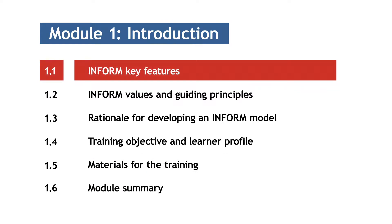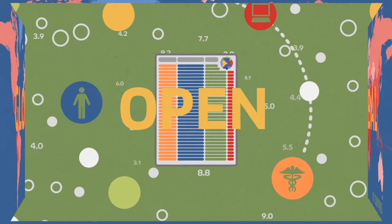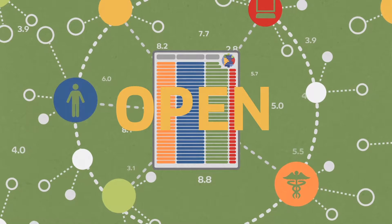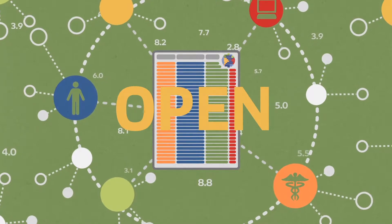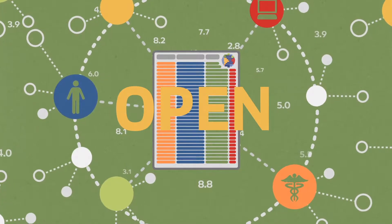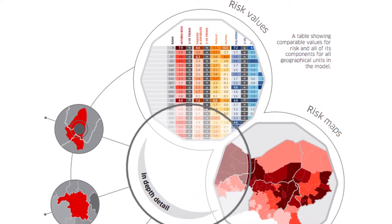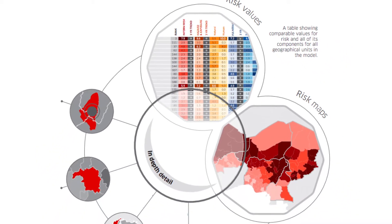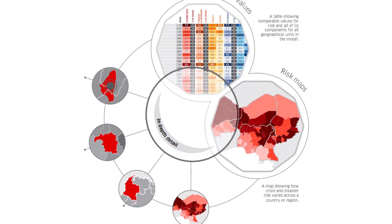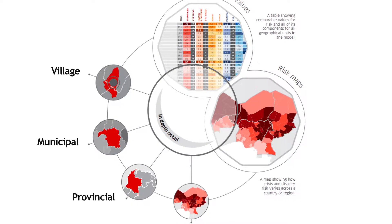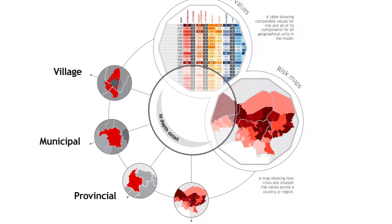As a quick review, INFORM is an open-source risk assessment methodology for crisis, governance, and development planning. An INFORM subnational risk index captures a detailed picture of risk and its components at the provincial, municipal, or village level that is comparable across a region or a country.